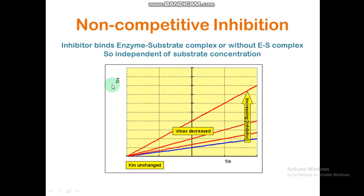In non-competitive inhibition, the inhibitor binds the enzyme-substrate complex or the enzyme without substrate — it is independent of substrate concentration. In this case, Km remains unchanged whereas Vmax decreases as inhibitor concentration increases. These lines will merge at the x-axis at some point.